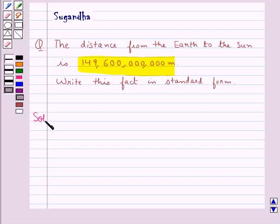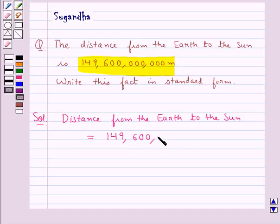Now let's move on to the solution. We are given that the distance from the Earth to the Sun is equal to 149,600,000,000 meters.